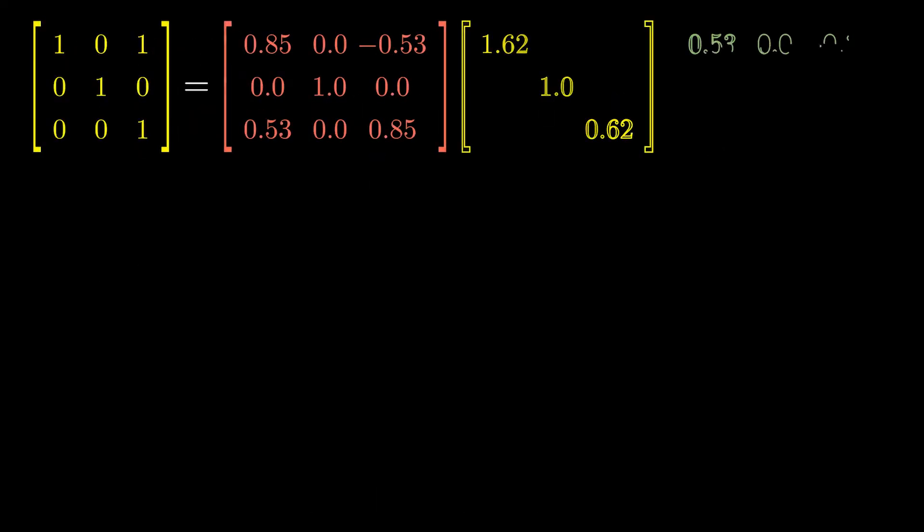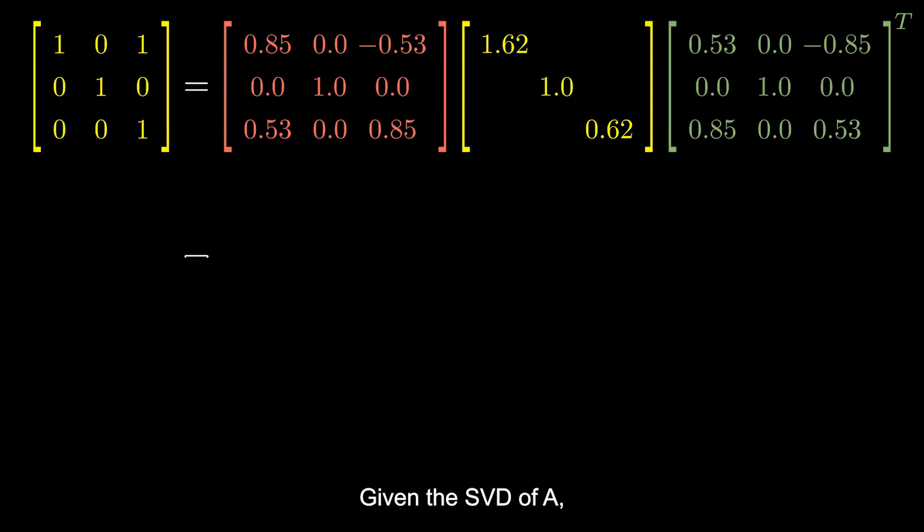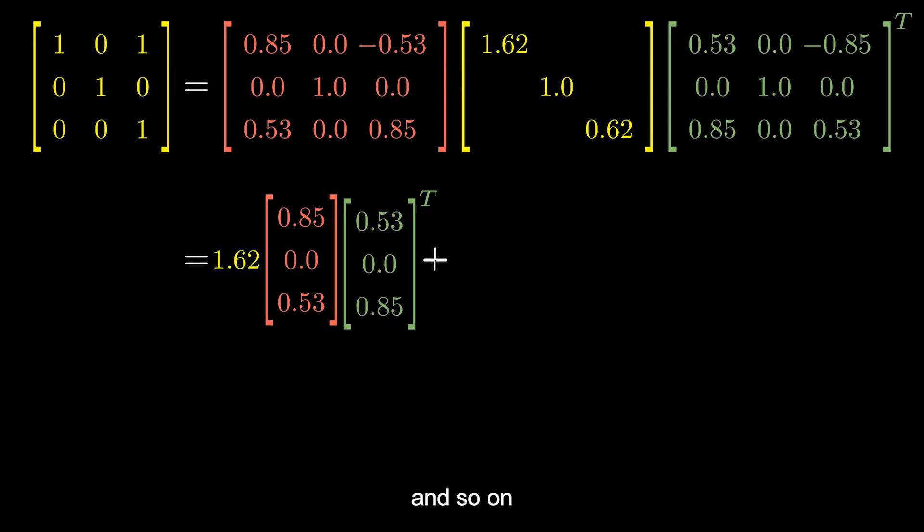Let's see an example. Given the SVD of A, we'll write out its expansion as we've seen before. Here, sigma-1 times U1 times V1 transpose, and so on.